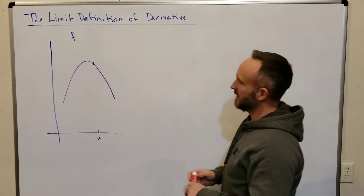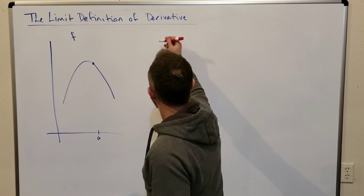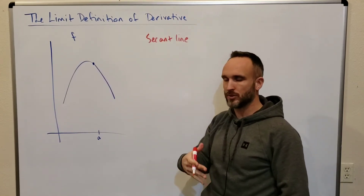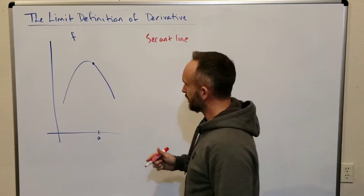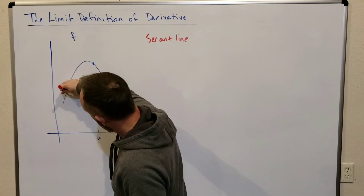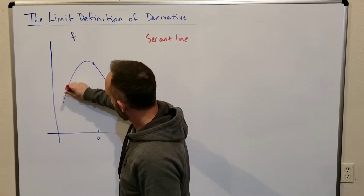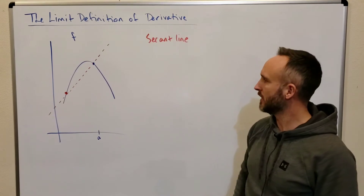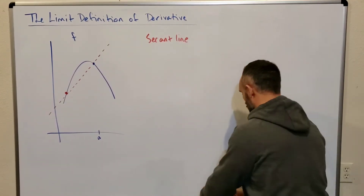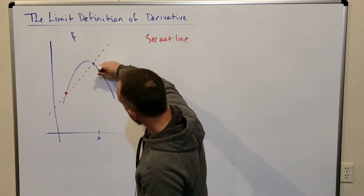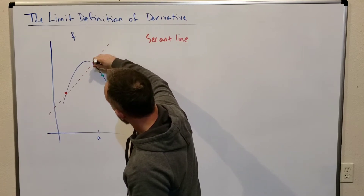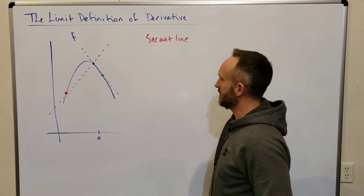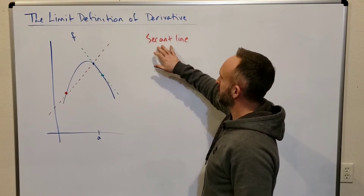A secant line passes through two points on a curve. If I have a point over here, then this line is the secant line through those two points. You can imagine you could create numerous secant lines — you could have a secant line going between this point and this point. Those are secant lines.